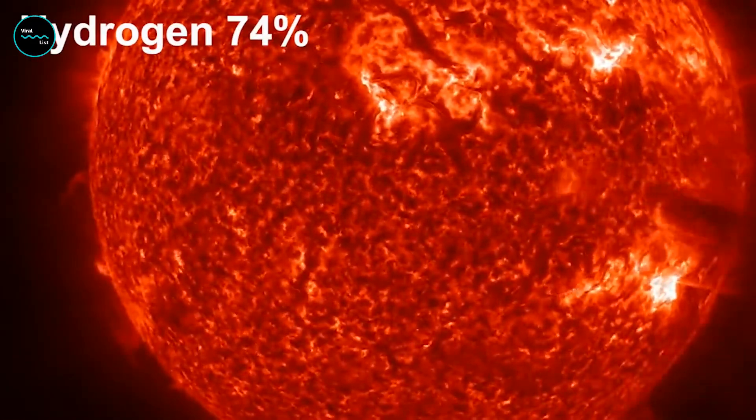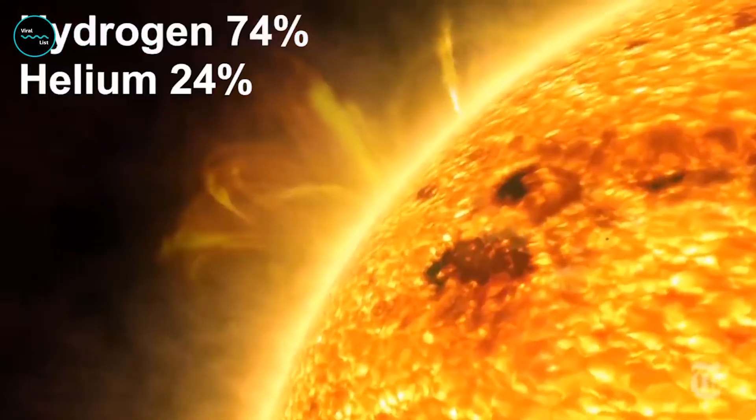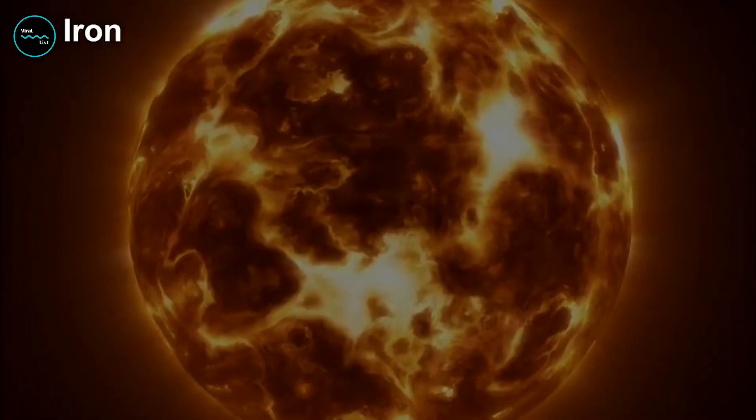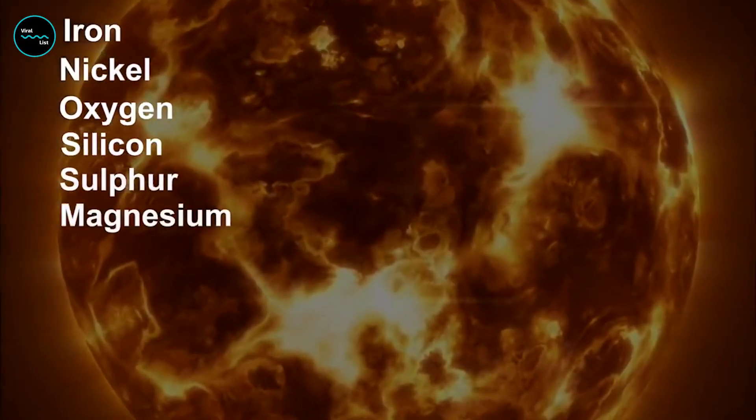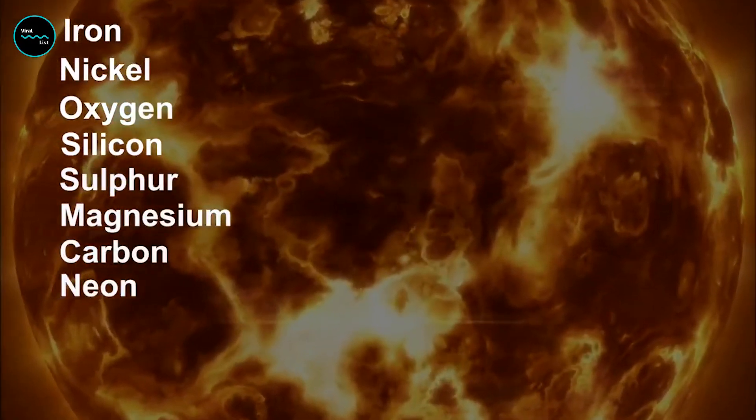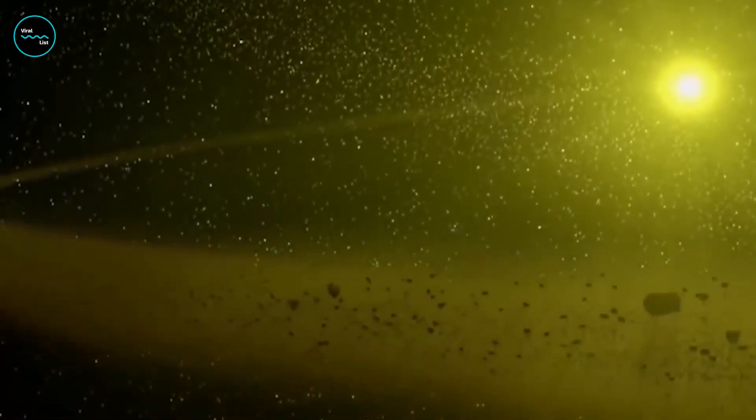Just like most other stars, the sun is made up mostly of hydrogen, followed by helium. Nearly all the remaining matter consists of seven other elements: oxygen, carbon, neon, nitrogen, magnesium, iron, and silicon. Without the sun's intense energy, there would be no life on Earth.